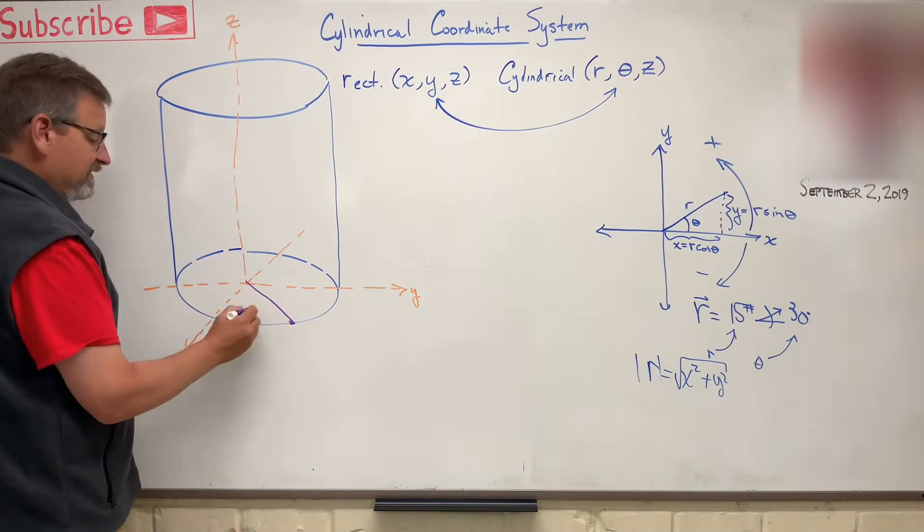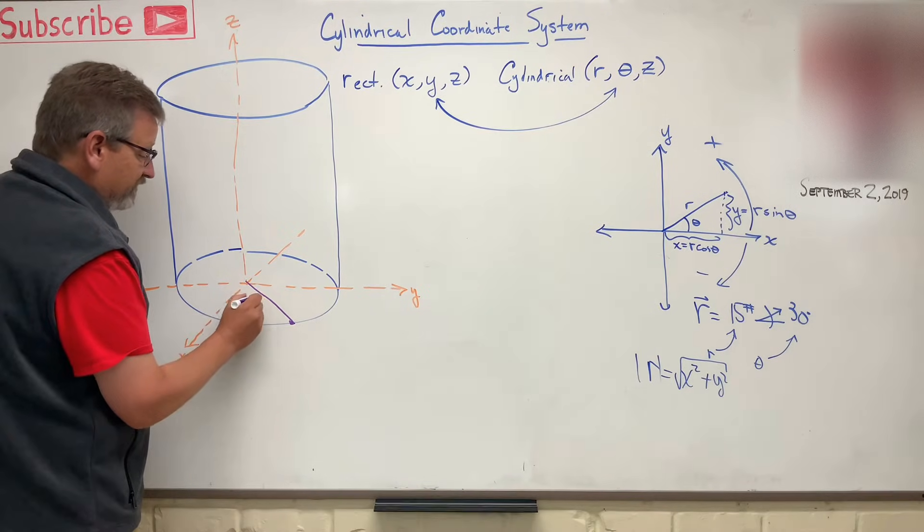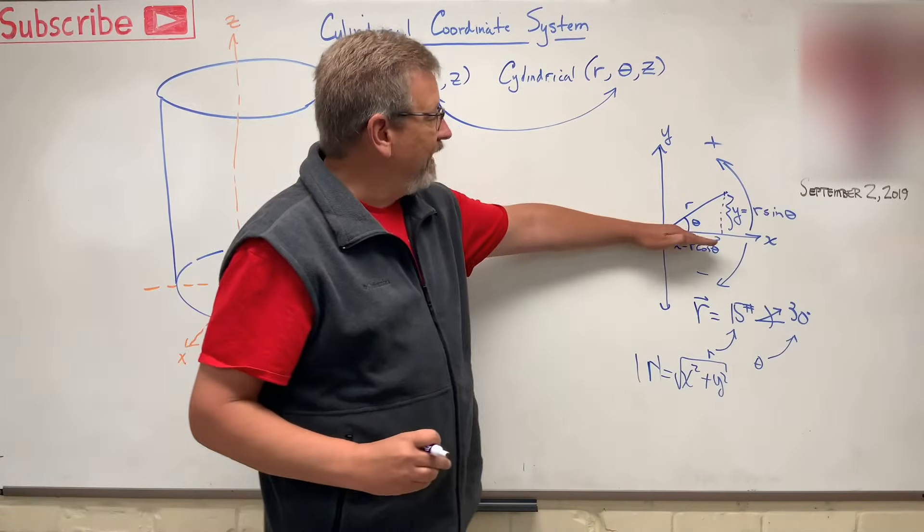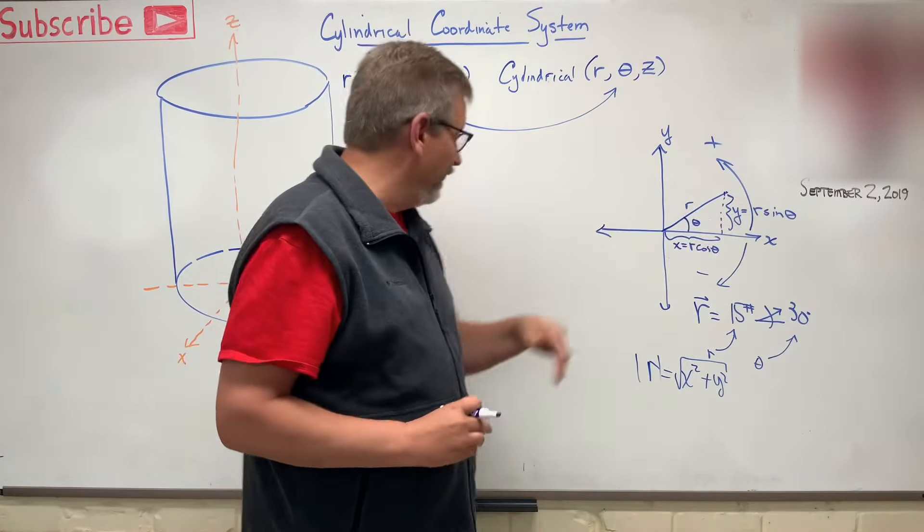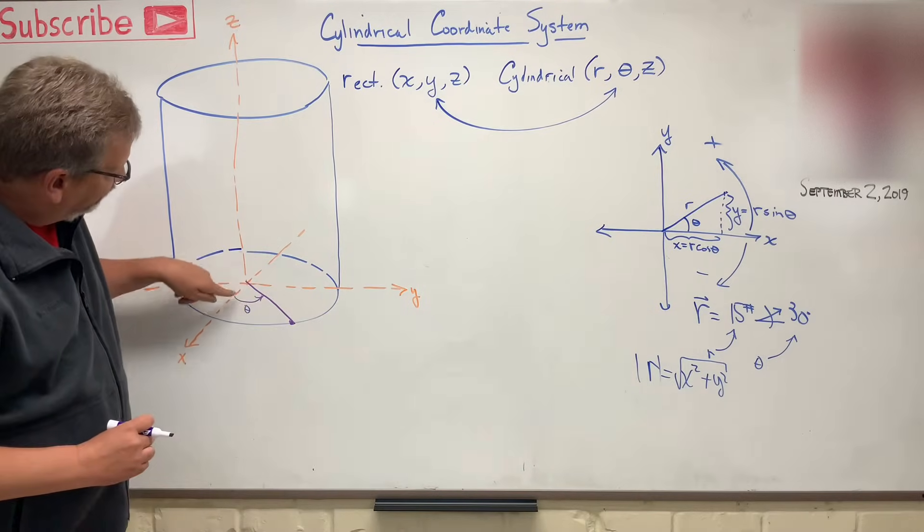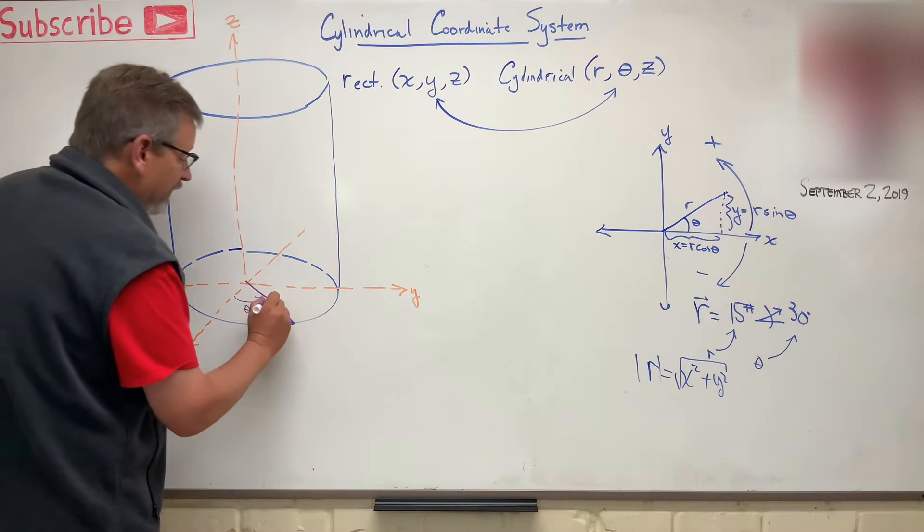So I get this. What I get is this. Here's theta. Remember, theta is measured from the x-axis going towards the y for positive. So here's the x-axis going towards the y for positive. There's theta, and here is r.